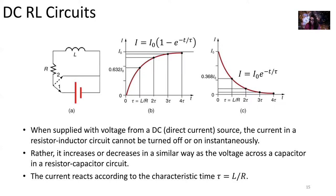When supplied with voltage from a direct current source, the current in our resistor-inductor (RL) circuit cannot be turned off or on instantaneously. The current will increase whenever I close the switch in a similar way as the voltage across a capacitor in our RC circuits. The current at some time is equal to the maximum current — which is the EMF of our DC power source divided by the resistance — times one minus e to the minus t over tau.